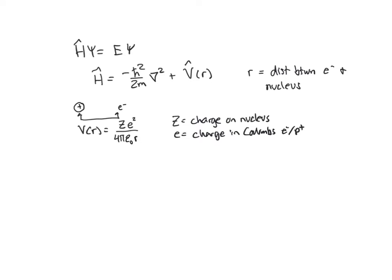R is the distance between the electron and the proton, as we defined. And this epsilon naught is the permittivity of a vacuum.